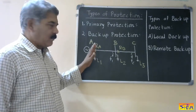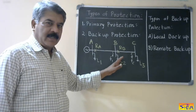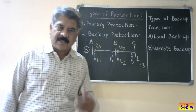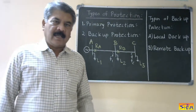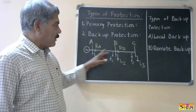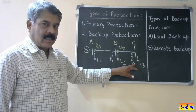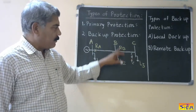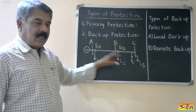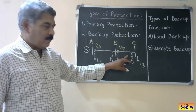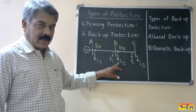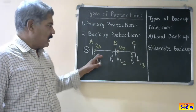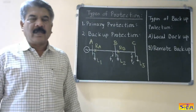The drawback of remote backup is that it has to wait for some time — when fault F2 occurs, R-B should operate first as the main protection, and only when R-B fails should R-A operate as backup. So there is a time-delayed operation; it does not operate instantaneously. A second major disadvantage is that when R-A operates for fault F2, loads L2 as well as L3 are both disconnected — a large area of the power system is disconnected when remote backup protection operates. But the advantage remains that no additional cost is required.